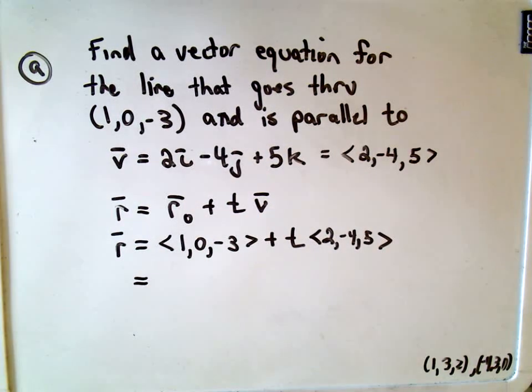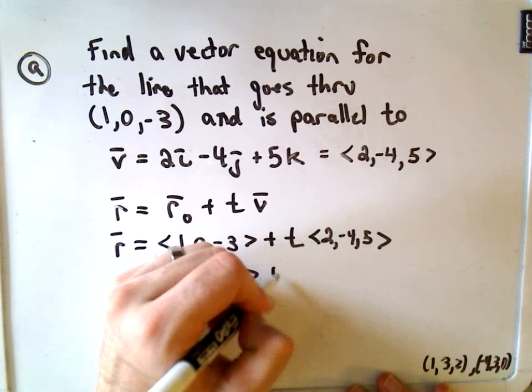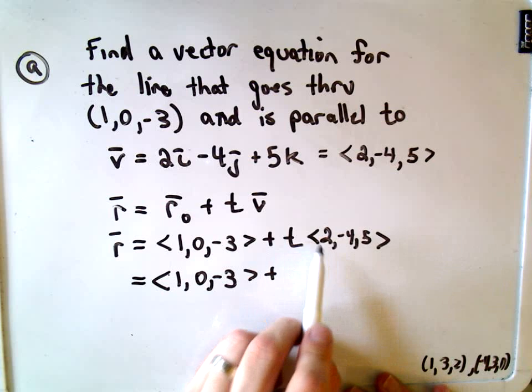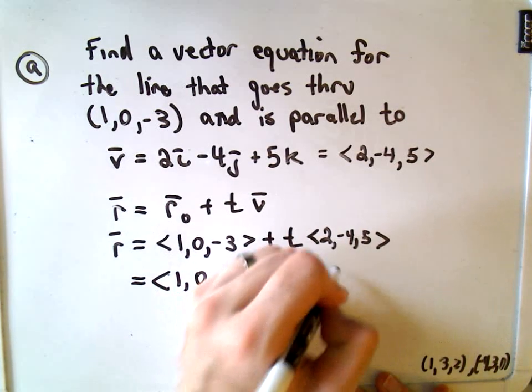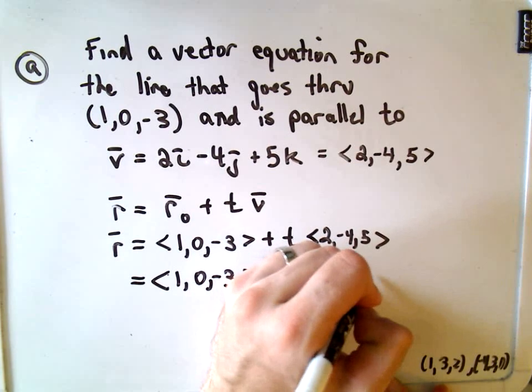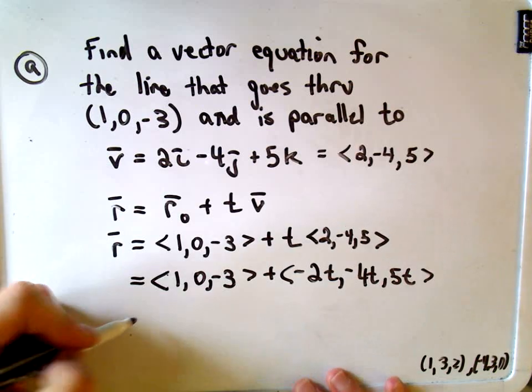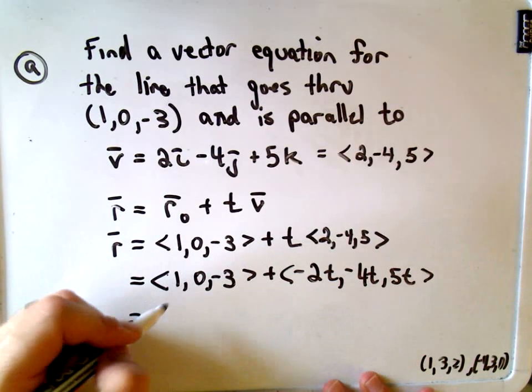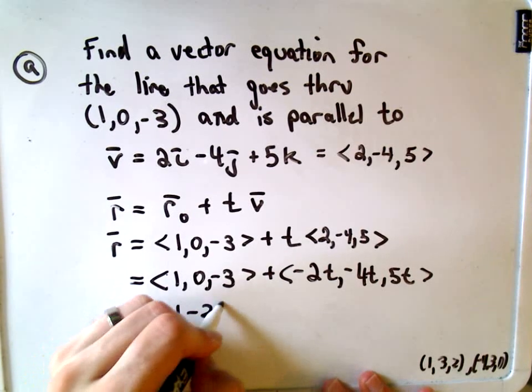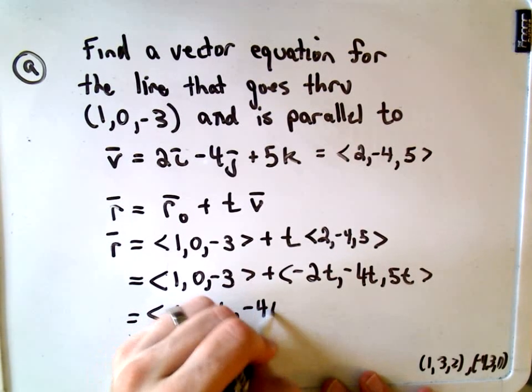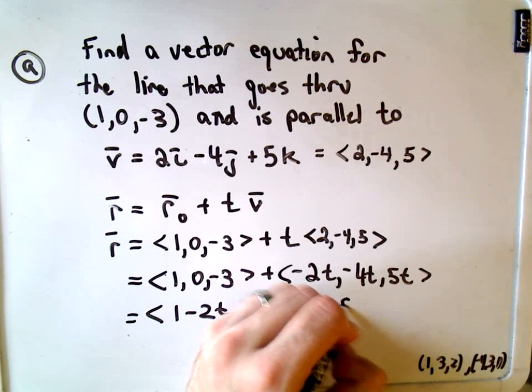And if you want to, you could rewrite this. So this is ⟨1, 0, -3⟩. Remember, if you multiply out front you have to distribute, so the t will get distributed to everything. So we get 2t, -4t, and then we'll get 5t. With vectors you add them component by component, so we'll get simply 1 - 2t, we'll get -4t, and then when we add we'll get -3 + 5t.